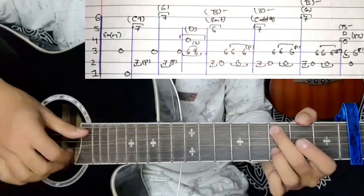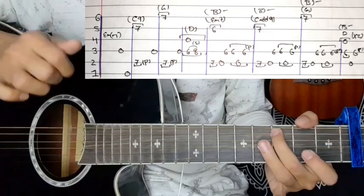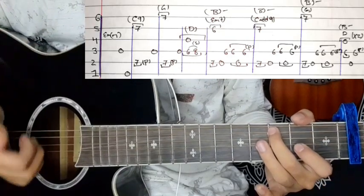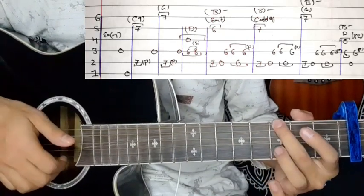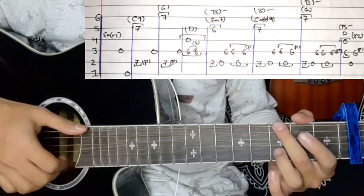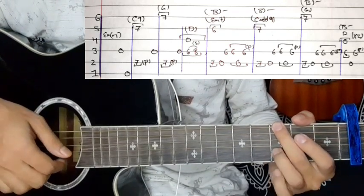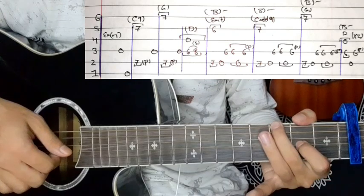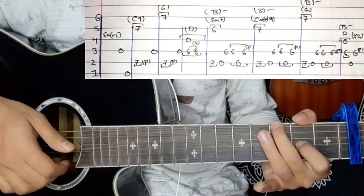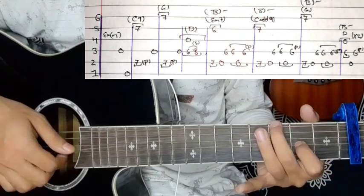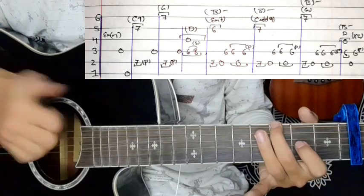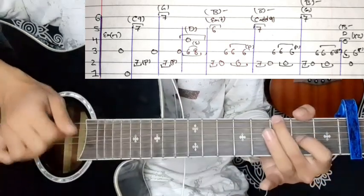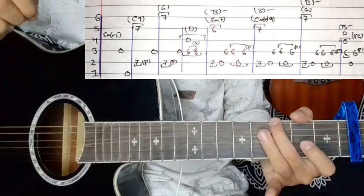Again, on the first beat and second beat: sixth string 7, second string 7, then the picking pattern 6-2, second string open, third string 6, then 6 again, second string open, third string 6 pull-off. This is the same for first time and last time.